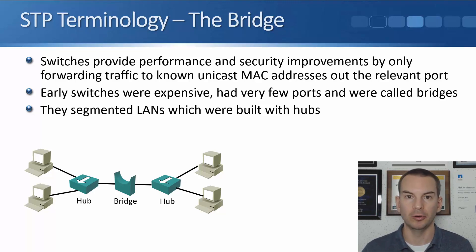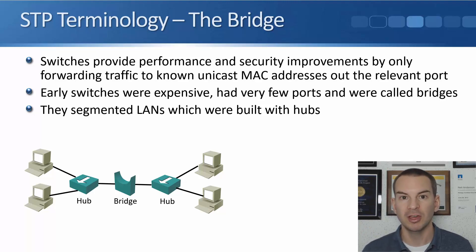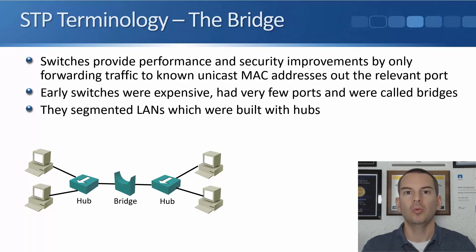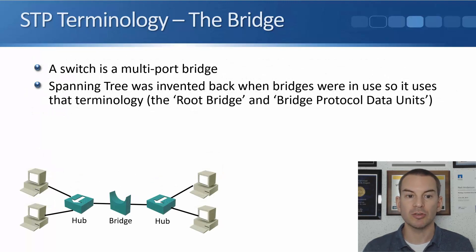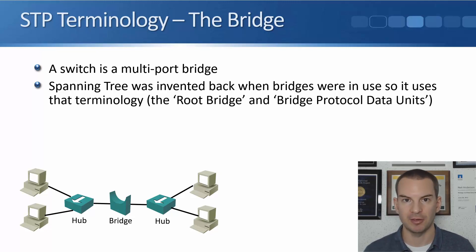What a bridge did was segment that large collision domain into two smaller collision domains. Traffic would typically stay on one side of the bridge and would only move over if the destination was on the other side. Bridges are basically switches, but with only around two ports. A switch is a multi-port bridge — a bridge and a switch are essentially the same thing, just that switches are modern devices with more ports.